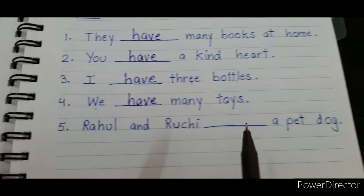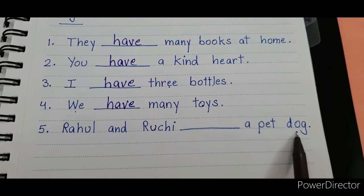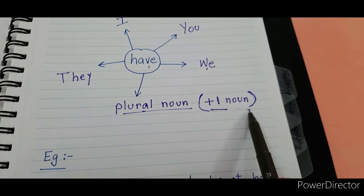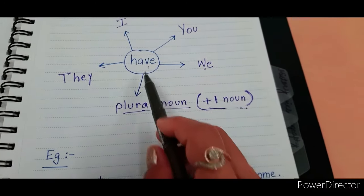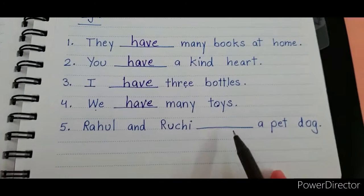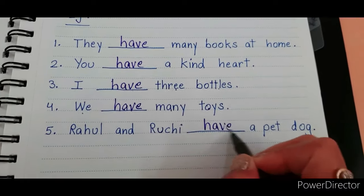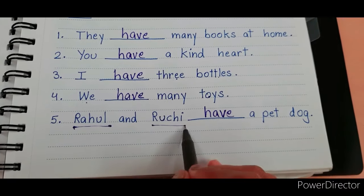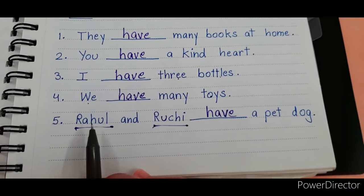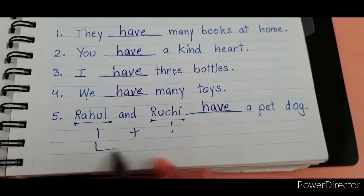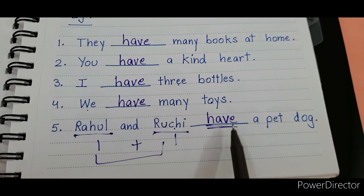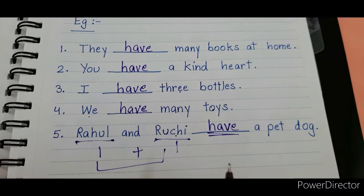Next: 'Rahul and Ruchi ___ a pet dog.' Do we have the words Rahul and Ruchi in our pronoun list? No. But here we have two nouns: Rahul is one noun — name of a person — and Ruchi is another noun — name of a person. One plus one means two nouns, which is more than one, so we use 'have': 'Rahul and Ruchi have a pet dog.'